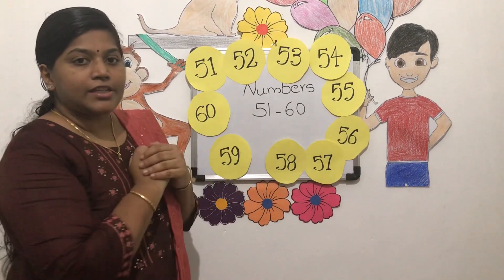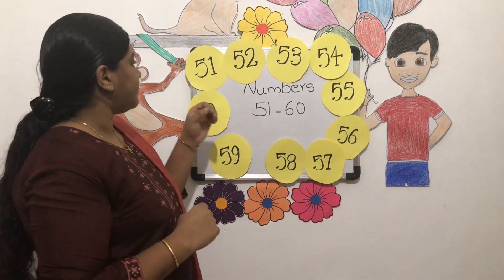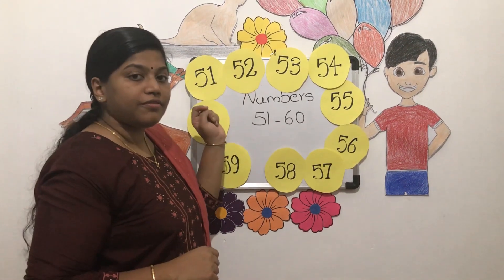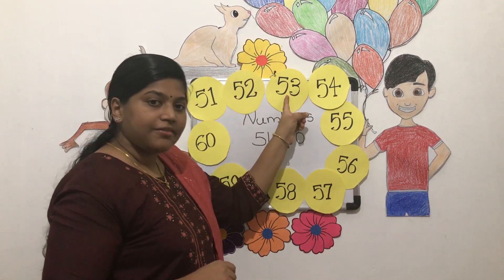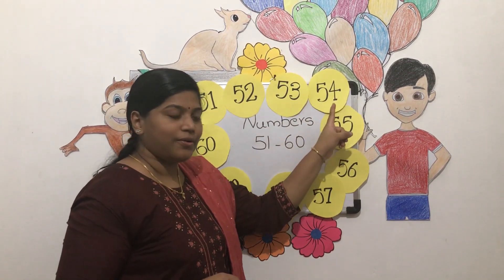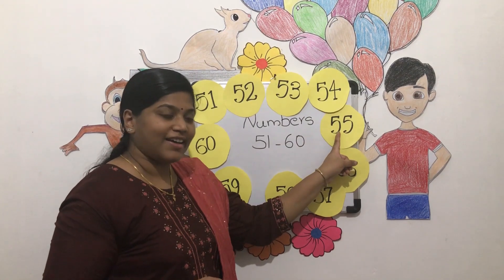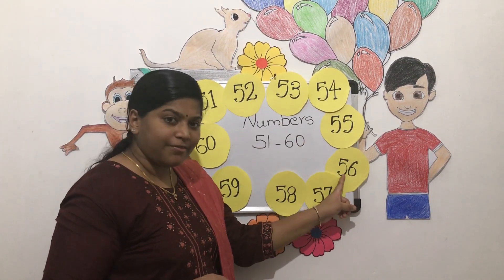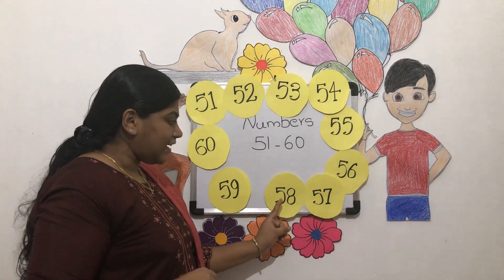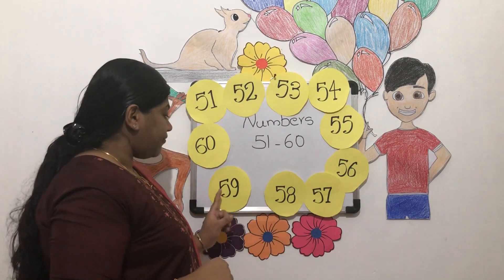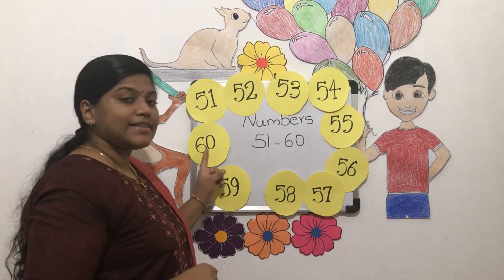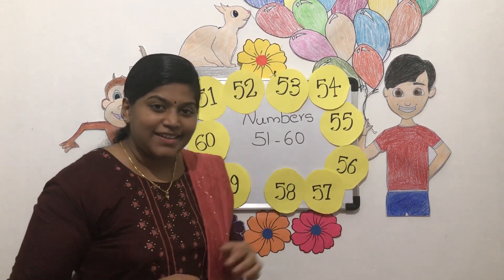Now let's count once more from 51. 5 1 — 51, 5 2 — 52, 5 3 — 53, 5 4 — 54, 5 5 — 55, 5 6 — 56, 5 7 — 57, 5 8 — 58, 5 9 — 59. And what is 6 0? It is 60.